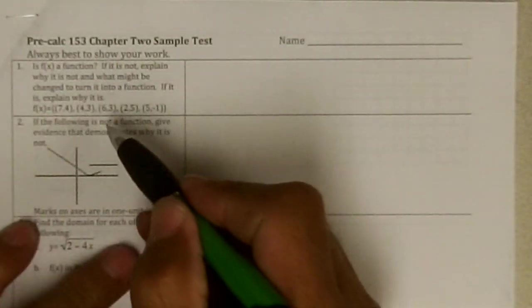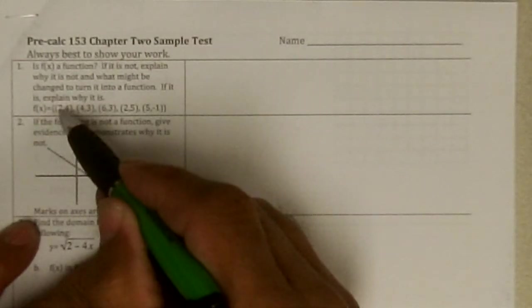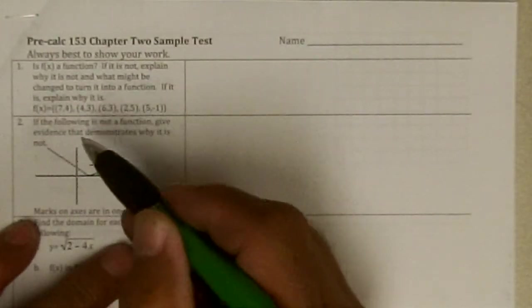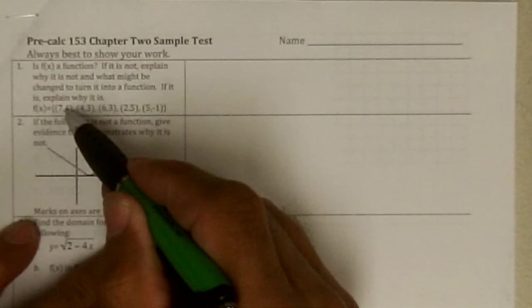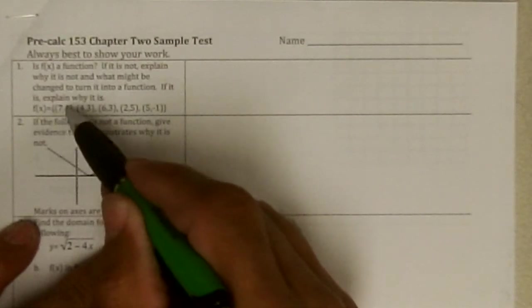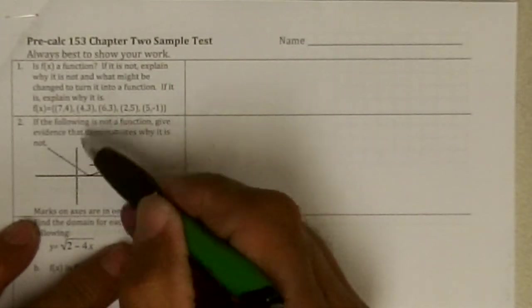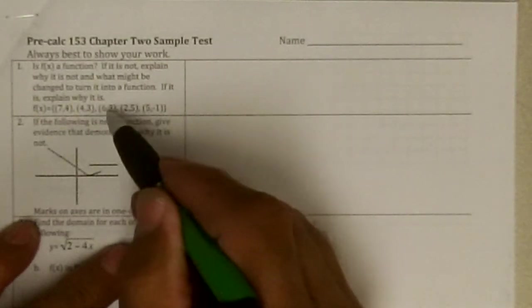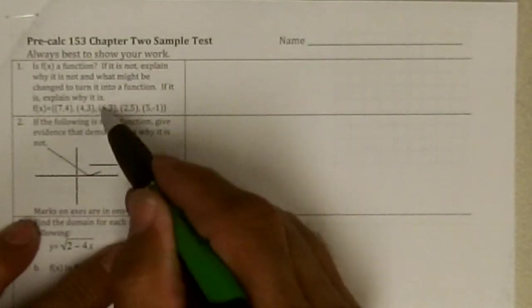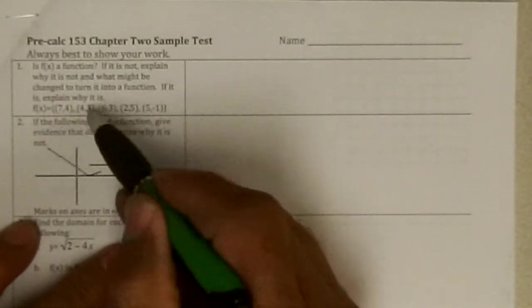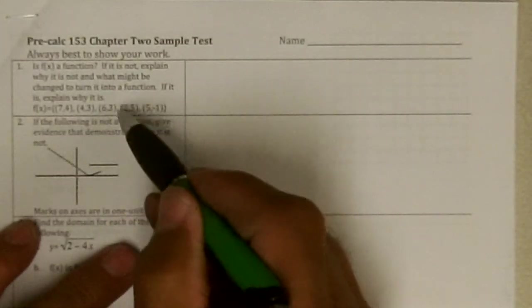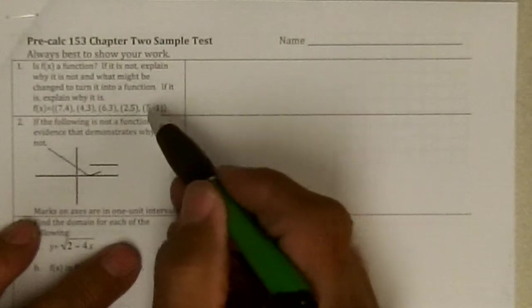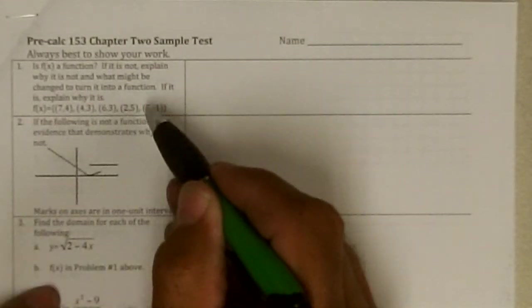To be a function, any domain element, any x, has to be mapped always to the same number. So 7 is mapped to 4, 4 is mapped to 3, 4 is not mapped to any other number. 7 is not mapped to any other number. 6 is mapped to 3, but 6 is not mapped to anything else. 2 to 5, and 2 is not mapped to anything else, any different number.